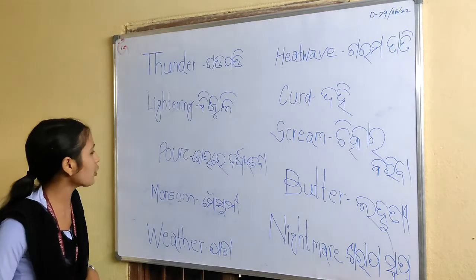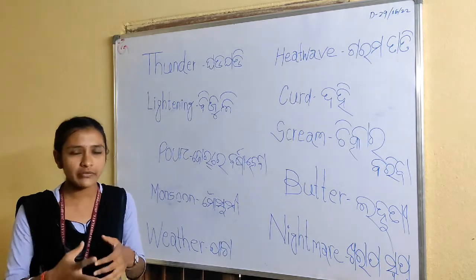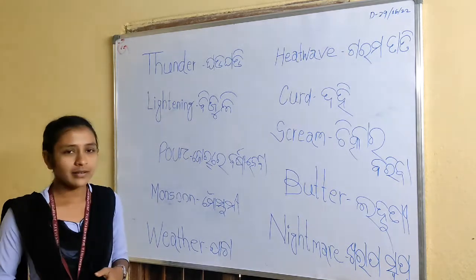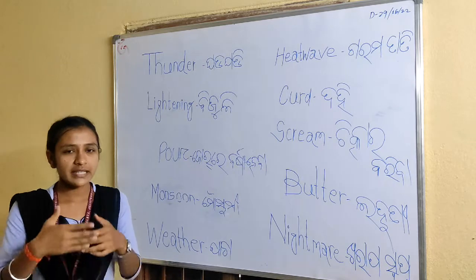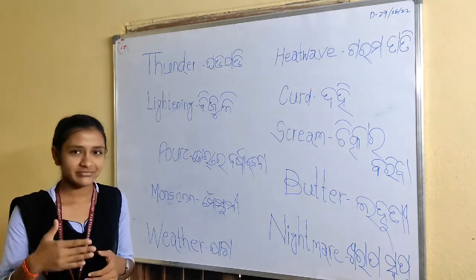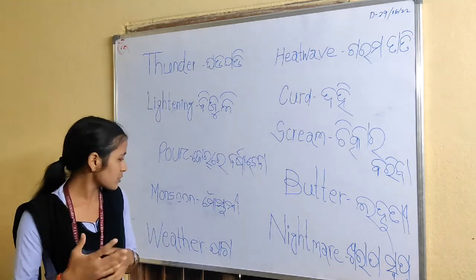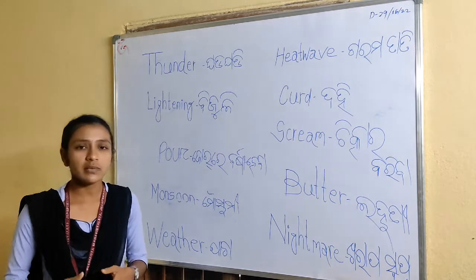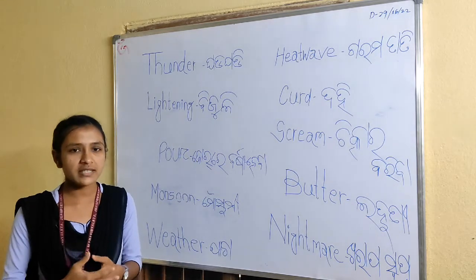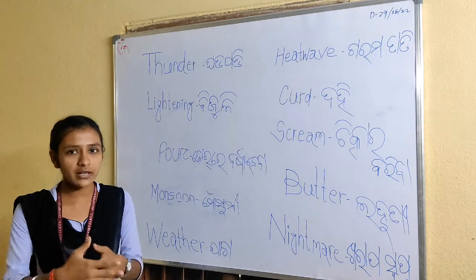The next word is pour. Pour means heavy rain — it is raining. And monsoon. Monsoon means mousumi. The monsoon is much more essential for crop cultivation.